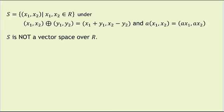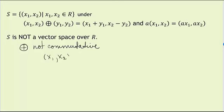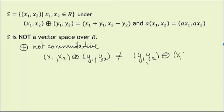S is not a vector space over R. I can see two reasons right away. One is that this operation in V is not commutative: (x₁, x₂) ⊕ (y₁, y₂) is not equal to (y₁, y₂) ⊕ (x₁, x₂). Write that out in your notes and make sure that you see that it's true. It's not commutative, therefore it's not a vector space.